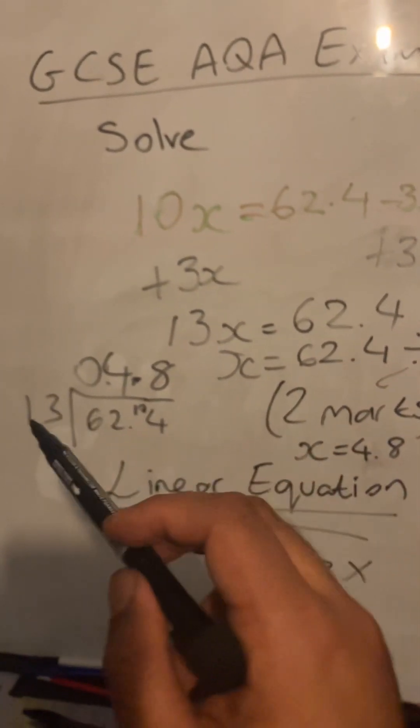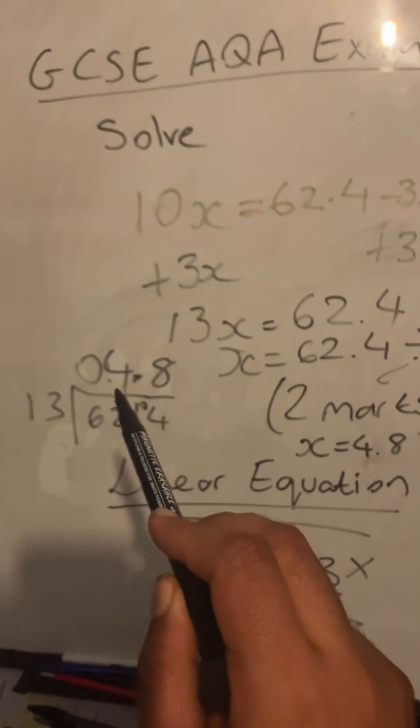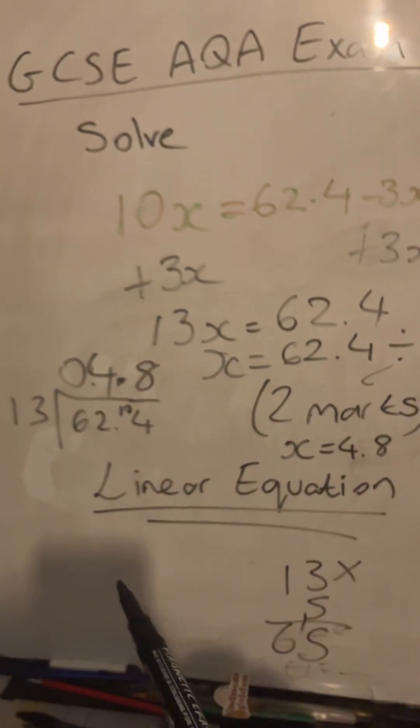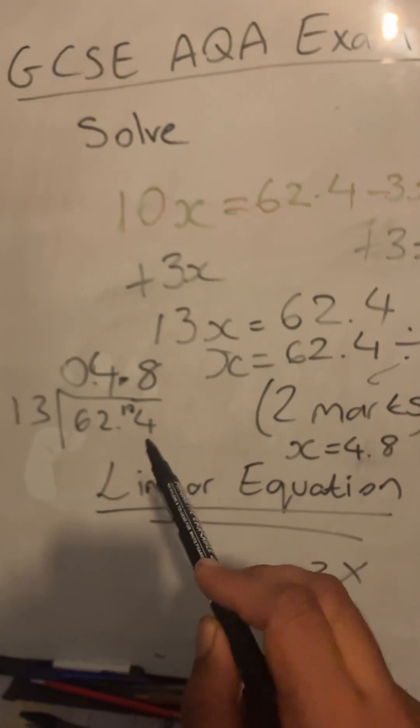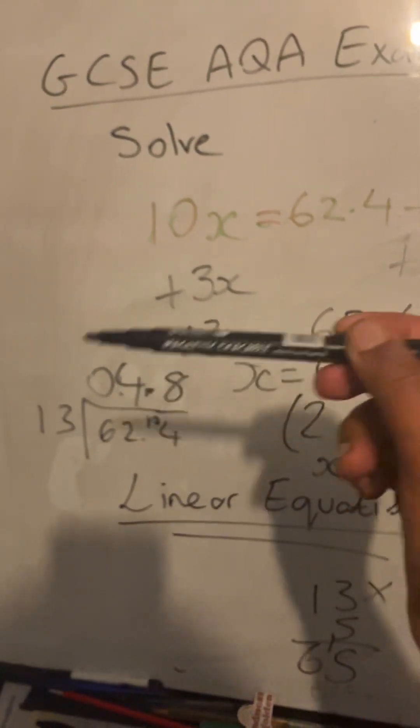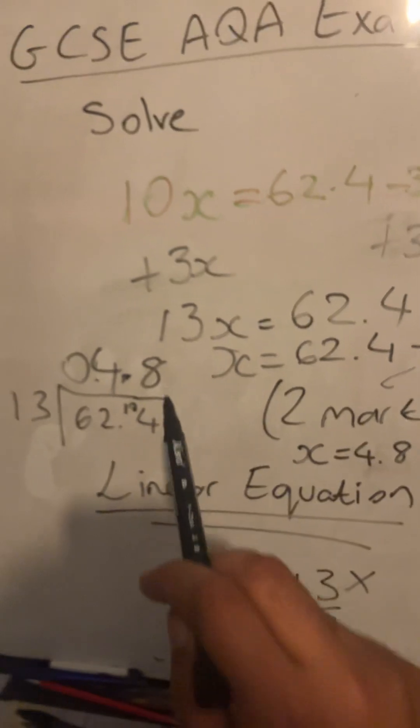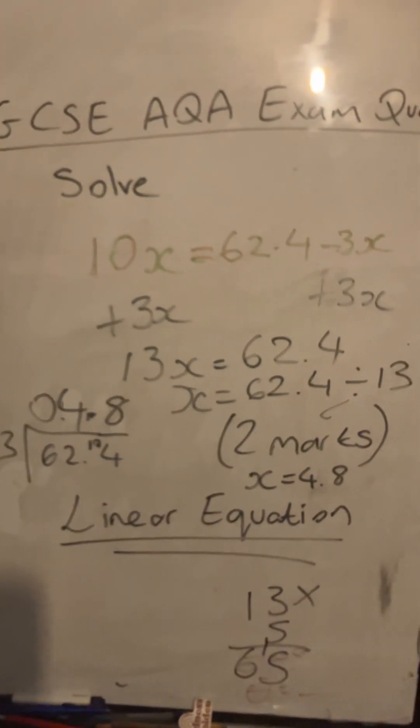So just to be clear, guys: 13 into 6 goes 0 times. 13 into 62 goes 4 times. 13 fours are 52, with a remainder of 10. 13 into 104—well, 104 is double 52, so it would be double of 4, so it would be 8. 13 eights are 104. So my final answer is just 4.8.